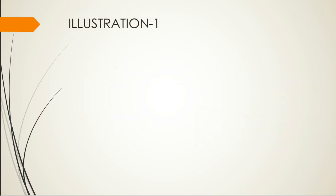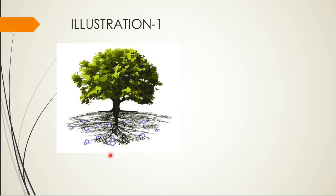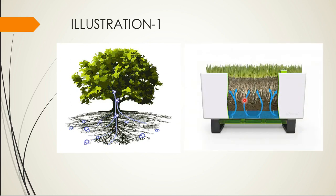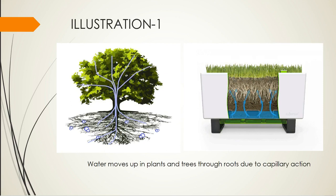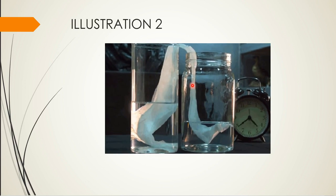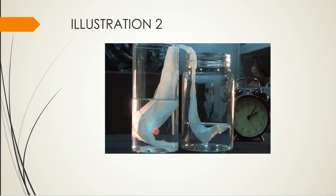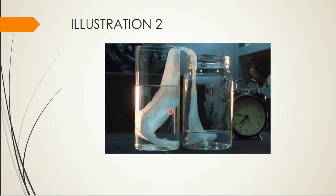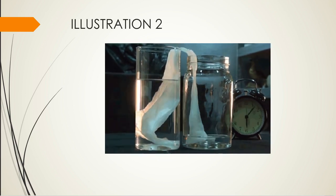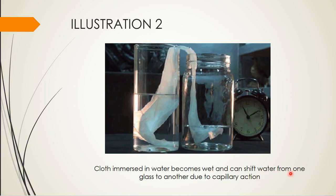Let us see the real life examples first. Water can spread through the roots to all the leaves and stems in a tree due to the action of capillarity — the water is transferred from the roots to the leaves due to capillary action. Another example: if you take two glasses, one filled with water and one empty, and lay a white cloth between them, the water level will slowly transfer and after some time both levels will be equal. The cloth becomes wet and can shift water from one glass to another due to capillary action.